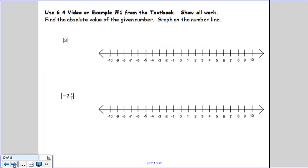Let's look at the first example. It says find the absolute value of the given number, graph the number on the number line. So to find the absolute value of 3, that means how far is 3 from 0. Let's plot the number 3.